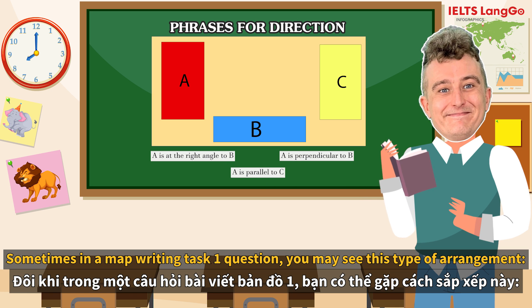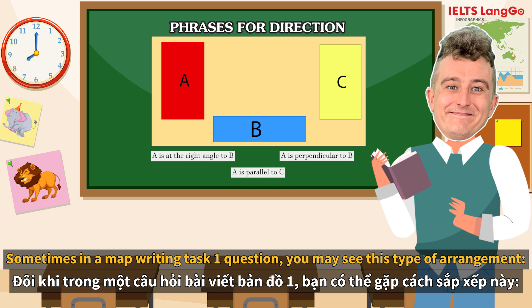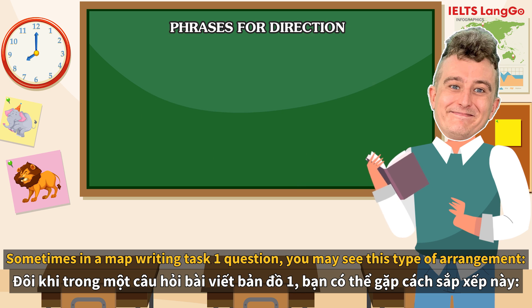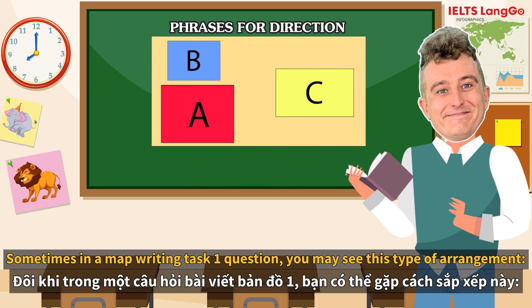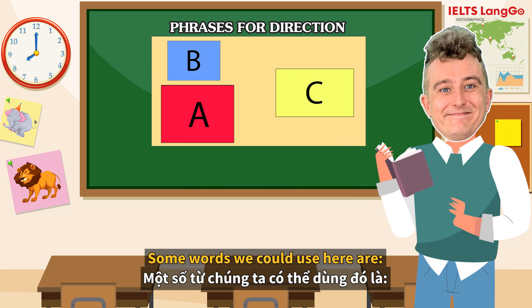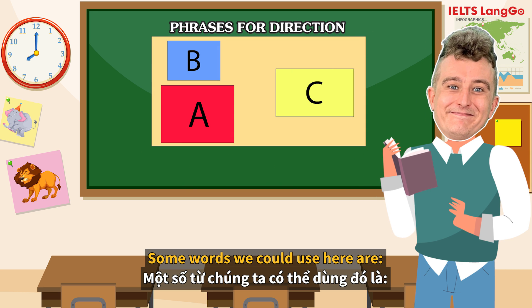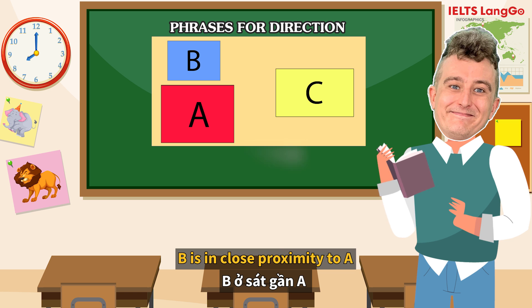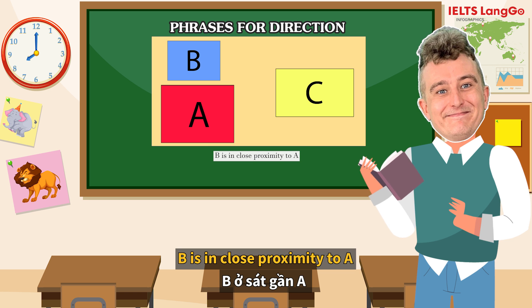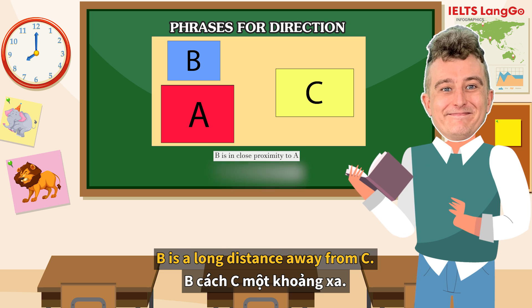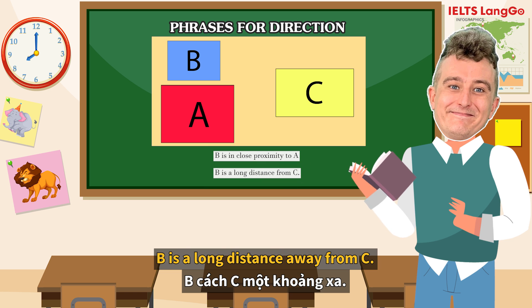Sometimes in a Map Writing Task 1 question, you might see this kind of arrangement. Some words we could use here are: B is in close proximity to A, or B is a long distance from C.